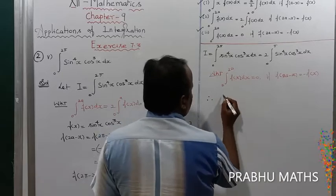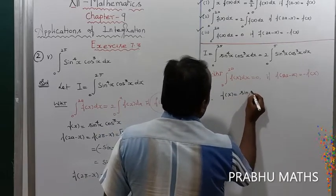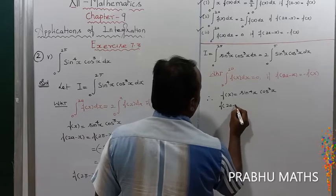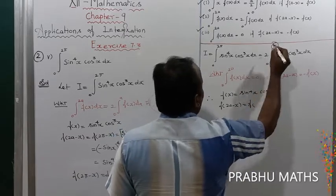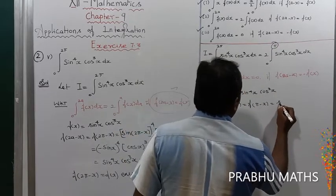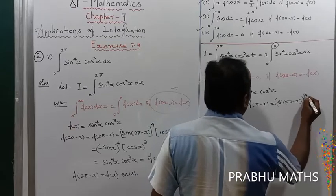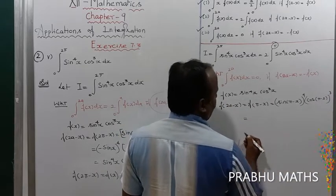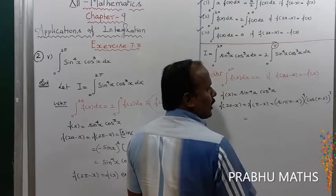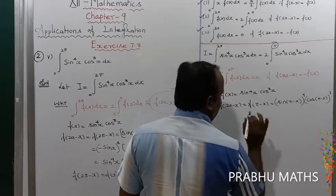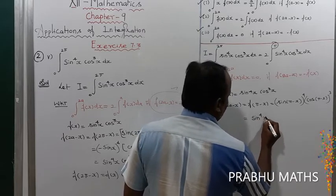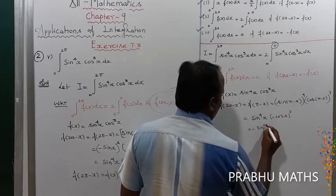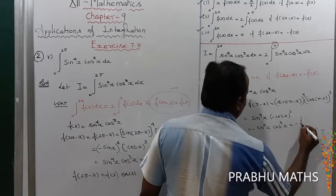With f(x) = sin⁴(x) cos³(x), we evaluate f(π - x) = sin⁴(π - x) · cos³(π - x). Since π - x is in the 2nd quadrant, sin(π - x) = +sin(x) so sin⁴(π - x) = sin⁴(x), and cos(π - x) = -cos(x) so cos³(π - x) = -cos³(x). Therefore f(π - x) = -sin⁴(x) cos³(x) = -f(x).